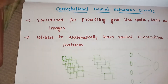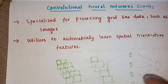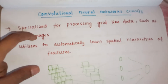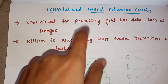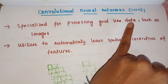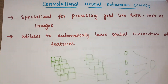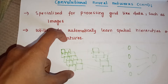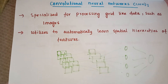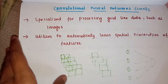The next one is convolutional neural network, also called CNN. This is specialized for processing grid-like data such as images. For example, when you want to scan a QR code — how does that image processing work? It uses a convolutional neural network, which is specialized for processing grid-like data. It utilizes layers to automatically learn a spatial hierarchy of features, as you can see in this diagram. Through this grid-like data, the information is processed and we get the output at the last layer. CNN is specialized for grid-like data such as images — remember that.